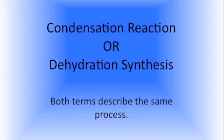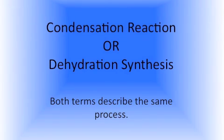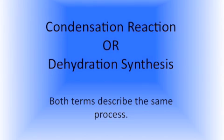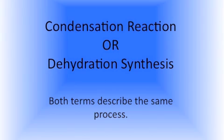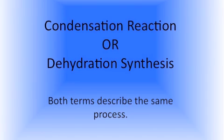So how do we get from a monomer to a polymer? Well, this can happen through something called dehydration synthesis. Sometimes it's referred to as a condensation reaction. Both terms describe the same thing.